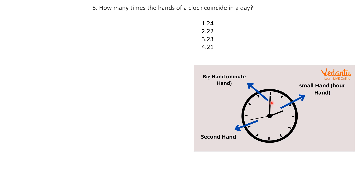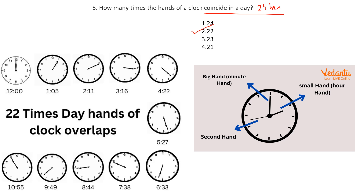In 12 hours, the hands coincide 11 times. Since a day has 24 hours, the total is 11 × 2 = 22 times. So the correct answer is 22 times in a day. I've shown an image with all the timings — there are 11 clocks shown for 12 hours, confirming 22 coincidences in 24 hours.